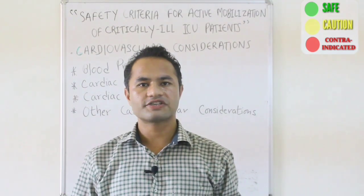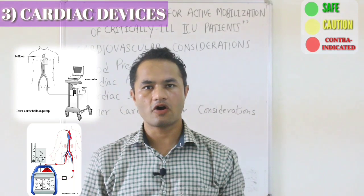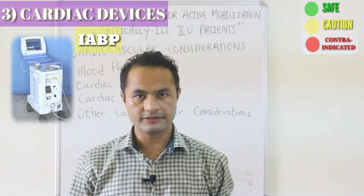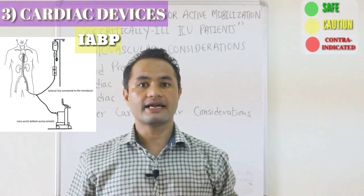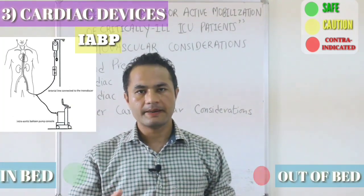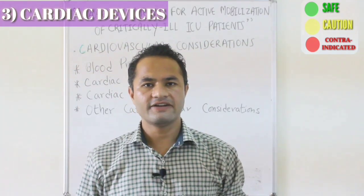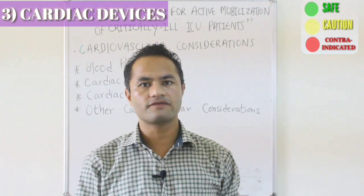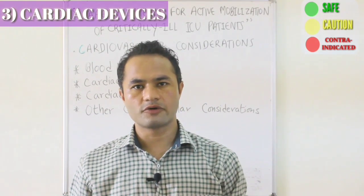The third cardiovascular consideration is the presence of mechanical devices such as IABP (intra-aortic balloon pump), ECMO (extracorporeal membrane oxygenator), or a pulmonary artery catheter. The femoral IABP is a portable device used in acute left ventricular failure, where a catheter is inserted into the femoral artery and guided up to the level of the descending aorta. Patients on IABP can be mobilized within the bed, but special care must be taken to avoid hip flexion on the side where the femoral catheter is inserted, as it can cause kinking and compromise IABP functioning.